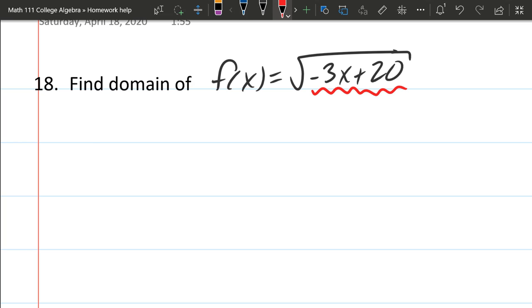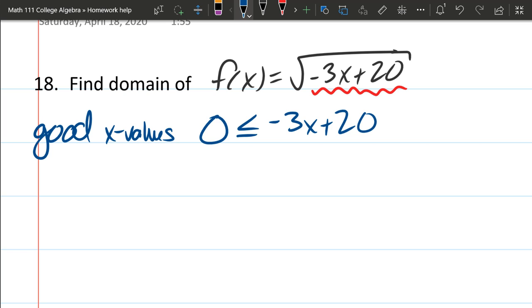So let's go ahead and pull this down here. I'm just gonna rewrite with an inequality like this. Okay, so these are good x values. I am ensuring that my square root is gonna be zero or more. So that's the inequality I wrote.